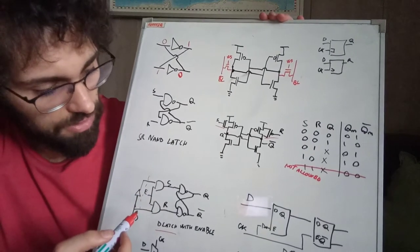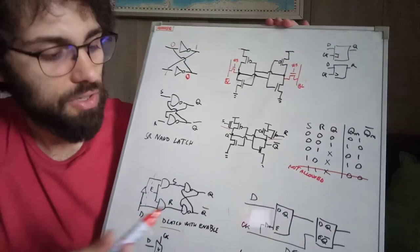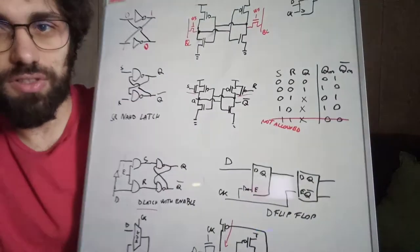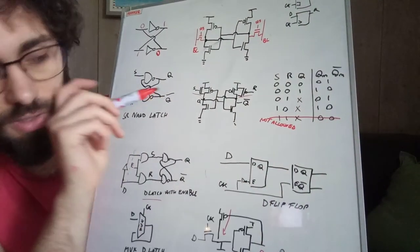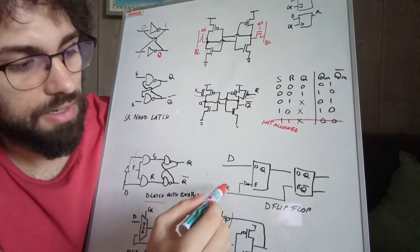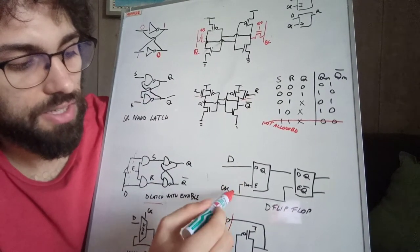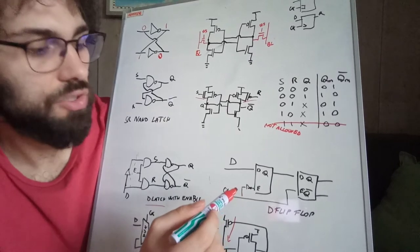So this is a latch that we just constructed with the enable, and a flip-flop is just two latches - one that works with the positive edge and the other one that works with the negative edge of the clock.